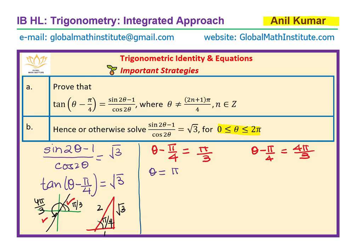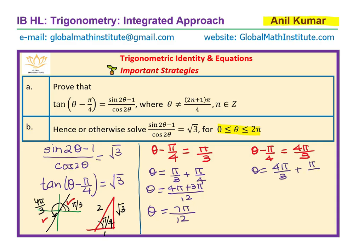Solving: θ = π/3 + π/4. Taking the common denominator of 12, we get 4π + 3π, giving θ = 7π/12. For the other part, θ = 4π/3 + π/4. Taking the common denominator of 12, we get 16π + 3π, giving 19π/12. So our two solutions are θ = 7π/12 and θ = 19π/12.